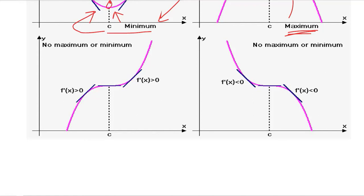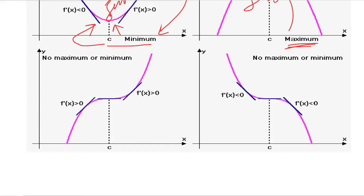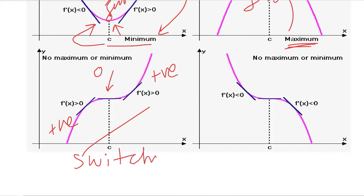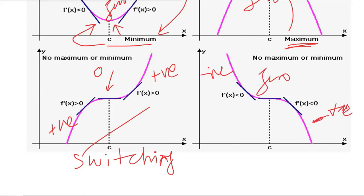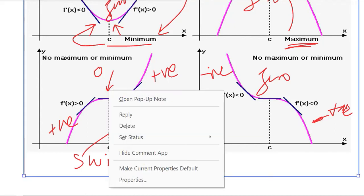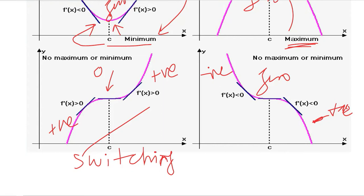There is another situation that can exist. If the slope is positive before a point and becomes zero but then becomes positive again, the slope is not switching sign. Similarly, if the slope is negative before and remains negative through zero, there is neither a maximum nor a minimum — because this is not the highest nor the lowest point. The value continues declining or increasing further on both sides.